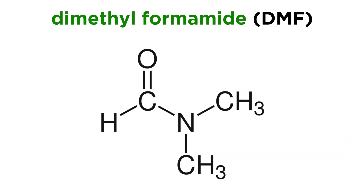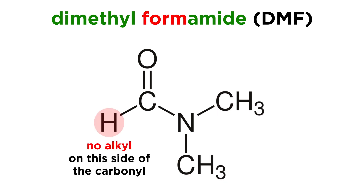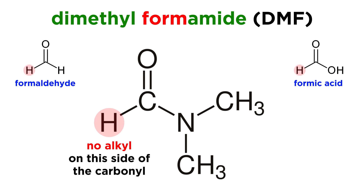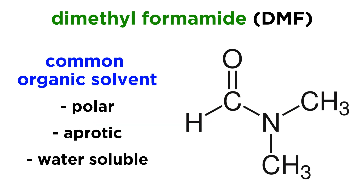Let's start out by looking at a very simple amide: dimethylformamide, or DMF. This has two methyls on the nitrogen atom, and the common prefix 'form' is referring to the lack of alkyl on the other side of the carbonyl, just like with formaldehyde or formic acid. DMF is a common organic solvent, which is polar, aprotic, and miscible with water, so we will encounter this in the lab quite frequently.